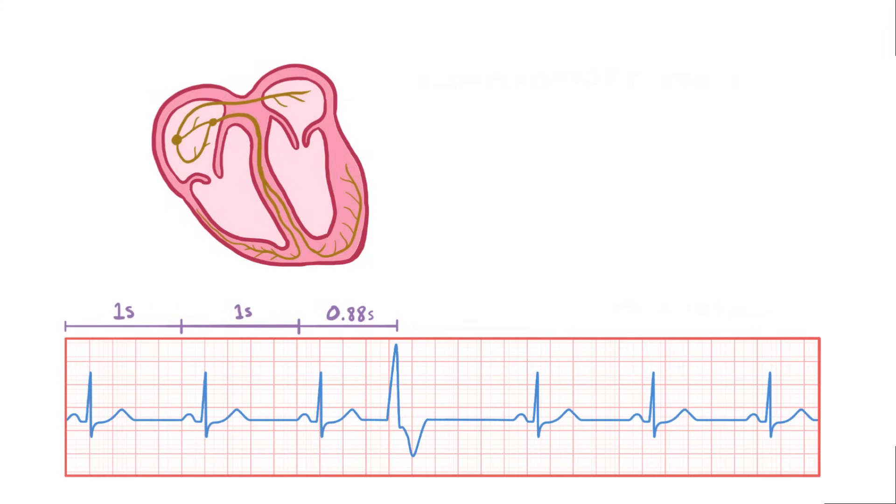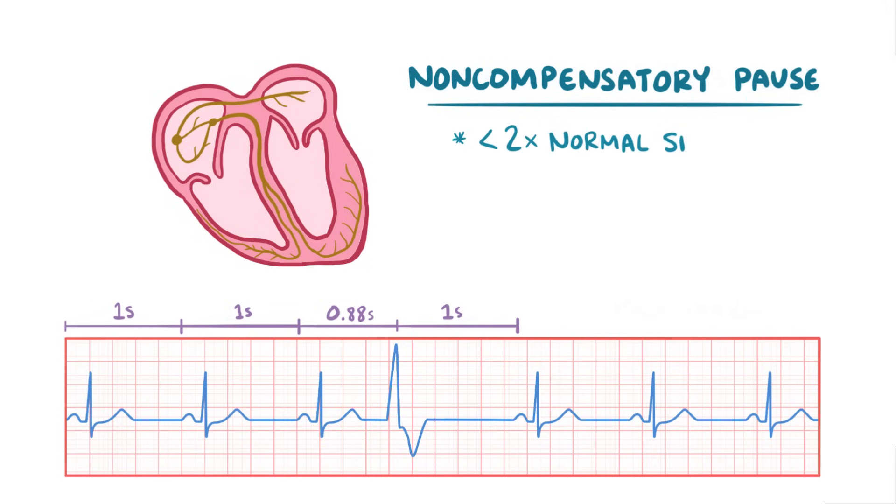In this case, after being depolarized, the sinus node waits its 1 second, and then sends another signal and again we carry on as normal. This time we call this a non-compensatory pause because the sinus complex lands less than 2 times the normal sinus interval, and this is how you can tell if the PVC depolarized the atrium or not.